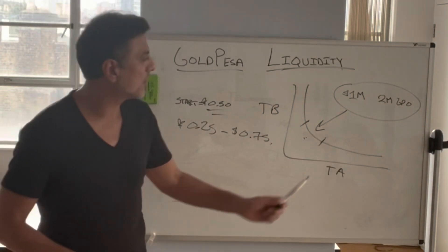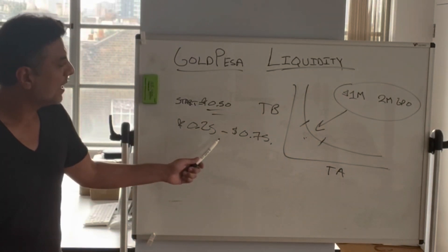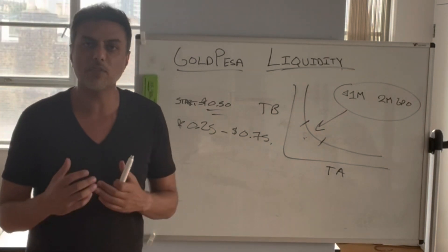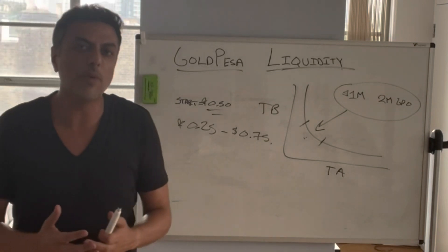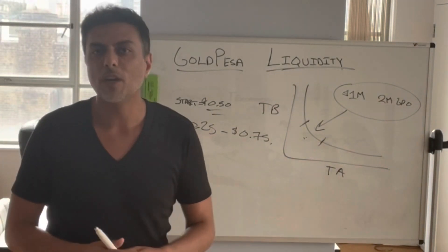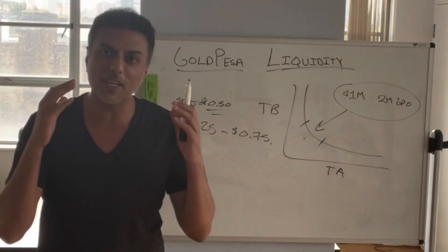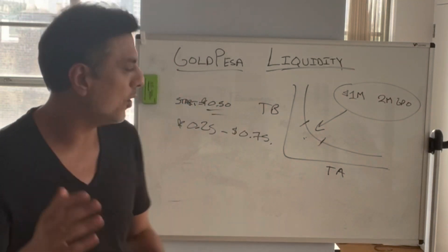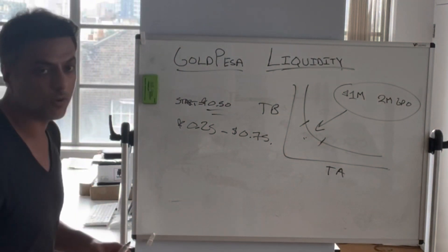And because we can control the liquidity and we can control the range, that gives us a little bit of strength — as long as there's demand there — to be able to output an equity curve which is safe, steady, and very, very, very profitable for all of you GPO token holders.